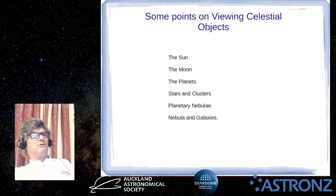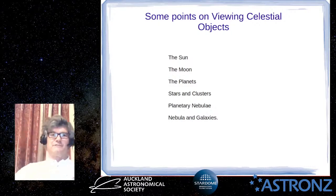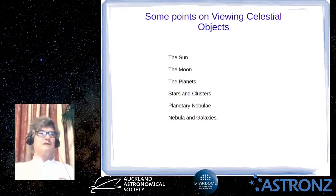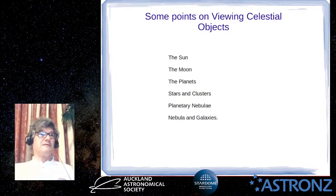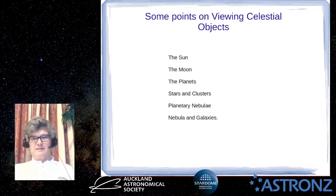In the final part of the talk we'll look at some specifics of viewing particular objects: the sun, the moon, planets, stars and clusters, planetary nebulae, other nebulae, and galaxies. Planetary nebulae are listed separately, and you'll see why when we get to them.